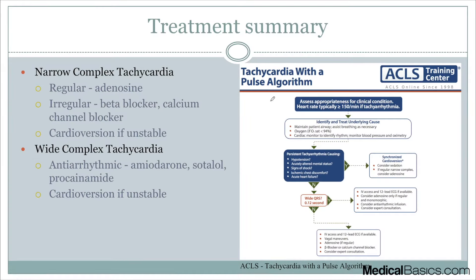It's also important to be able to map that algorithm onto the ACLS algorithm, because that's what you're going to be seeing more often. They break it down into: is it wide or is it narrow? Taking the narrow example first — if it's not wide, it's narrow. We'll walk through vagal maneuvers and then adenosine if it's regular, as we mentioned, and then any type of rate control like a beta blocker or calcium channel blocker.